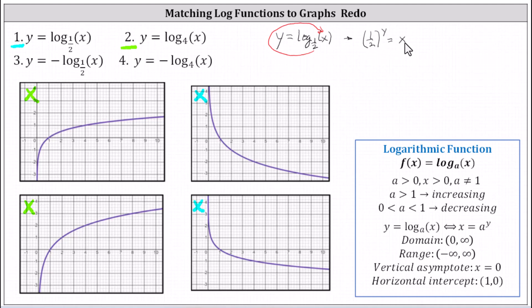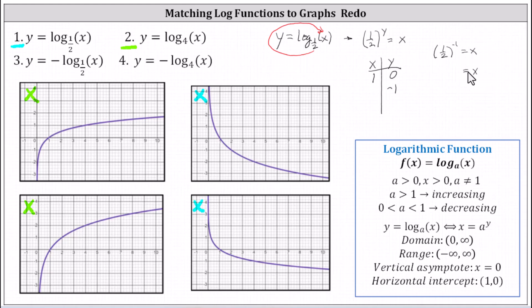Now we'll make a table of values. Because we have one half to the power of y, we'll select the y values, not x values. Let's use y equals zero and y equals negative one. When y is zero, one half to the power of zero equals x, so x is one. When y is negative one, one half to the power of negative one equals x. Recall, one half to the power of negative one equals two divided by one to the positive one, so x equals two.